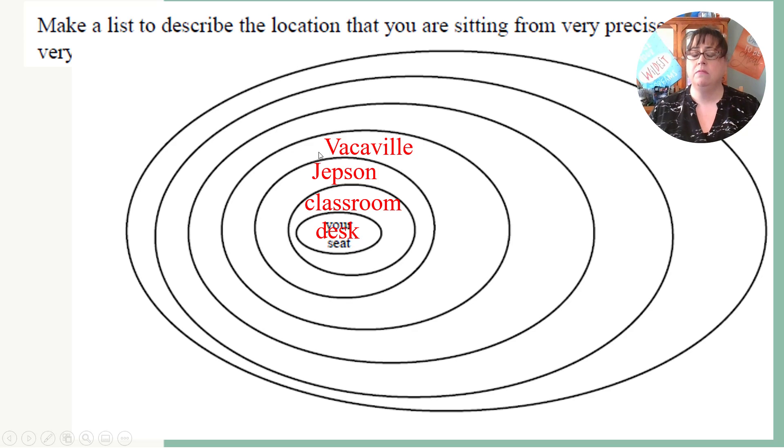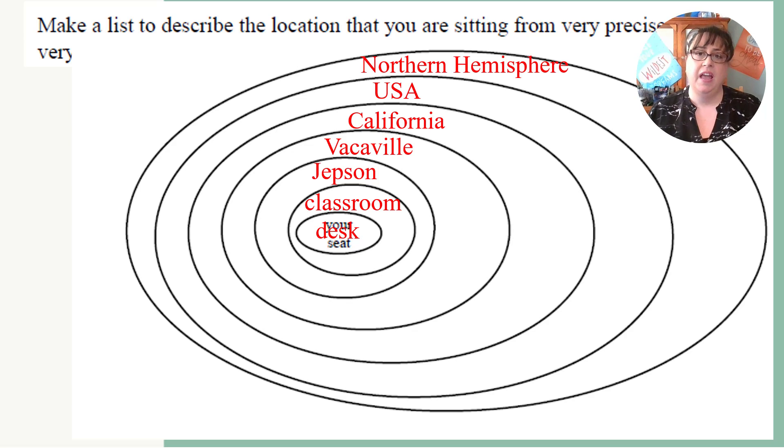So Vacaville is in a larger state, which is California. And again, these are towns out here that are not Vacaville, but they are California. And California is in a larger country, which is the United States. And then the United States is in a larger area of the Northern Hemisphere. And the Northern Hemisphere sits in a larger thing called the Earth. And then we can even say further, the Earth is in something larger called the Milky Way.